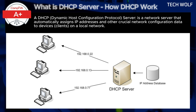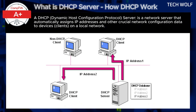So why do we need DHCP? Without DHCP, each device on a network would need a manually assigned IP address, subnet mask, default gateway, and DNS information. This would be complicated, prone to errors, and difficult to manage, especially in networks with many devices or where devices frequently connect or disconnect. DHCP streamlines this process by automating it, making network configuration both easier and more reliable.